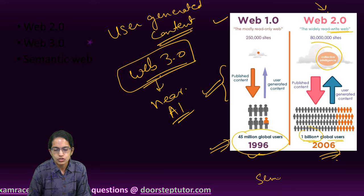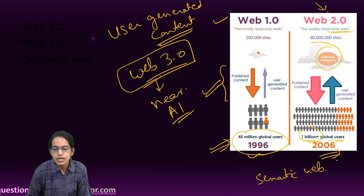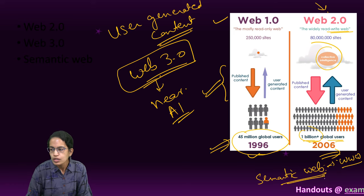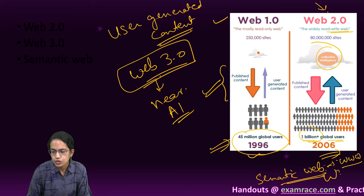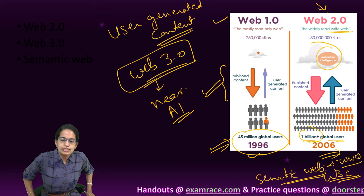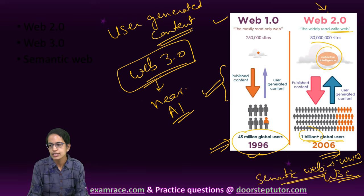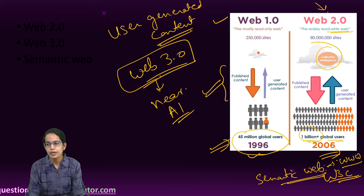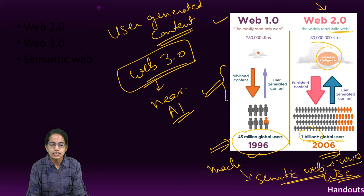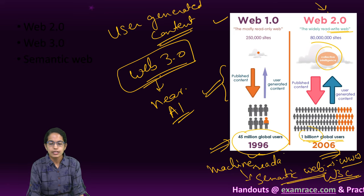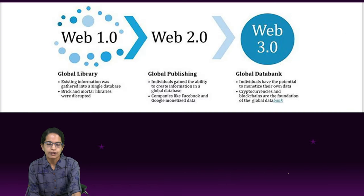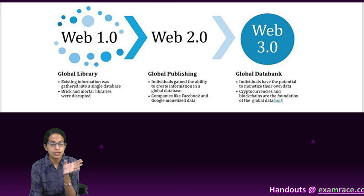Another commonly used term is the semantic web. The semantic web is the extension of the World Wide Web through the World Wide Web Consortium, W3C. Through it, there is an extension of the WWW, and this semantic web is used to make internet data machine readable. Semantic means understanding — so a machine can understand what is on the internet.